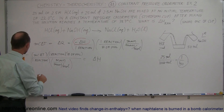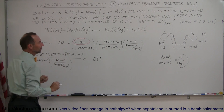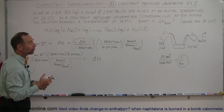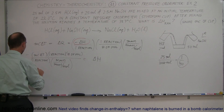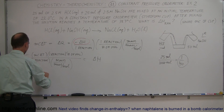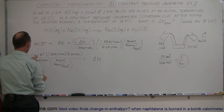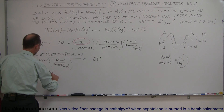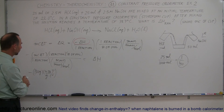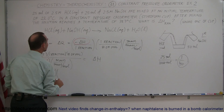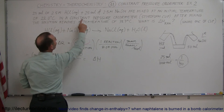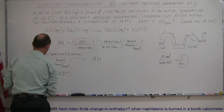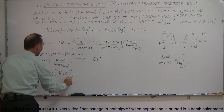Let's plug in the numbers. We have 50 milliliters of solution, which means 50 grams because water has a mass of roughly 1 gram per milliliter. That's 50 grams times the specific heat of water, which is 4.186 joules per gram per centigrade degree. Times the change in temperature — going from 22 to 38.7 degrees, that's a 16.7 centigrade degree change. So that's our MCΔт — the heat absorbed by the calorimeter.